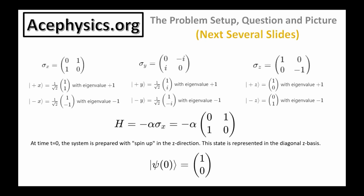I've created several videos on these matrices and I'll link them in the video description. The eigenvectors for all the matrices are given here, as well as their associated eigenvalues, which are plus and minus one. When a spin-1-half particle is placed in a magnetic field along the x-axis, the Hamiltonian is negative some constant times sigma x. The Hamiltonian is derived from experimental results.